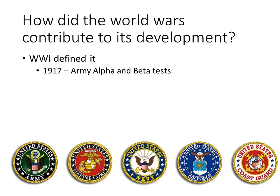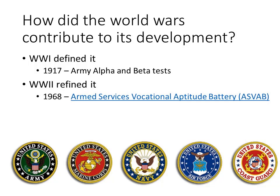There is another set of events I want to mention. Both World War I and World War II, and the military in general, had an enormous impact on how IO psychology developed. World War I defined IO psychology — in 1917, a group of IO psychologists, Yerkes, Scott, and Bingham, developed the Army Alpha and Beta tests. In 1968, those two tests became the first ASVAB, and then World War II refined the field.